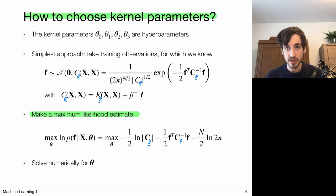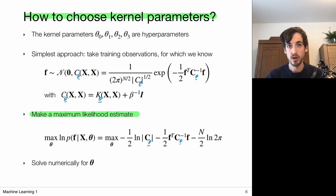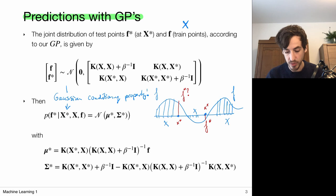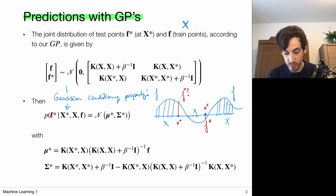Gaussian processes provide a very flexible way to derive predictive distributions in a non-parametric way by choosing a kernel that describes the process. These predictive distributions can be thought of as posterior Gaussian processes, where we condition function evaluations for unseen data points on the training set. We condition predictions on the existing dataset by factorizing the multivariate Gaussian, giving conditional distributions that are still Gaussian with a particular mean and covariance matrix entirely based on the kernel.